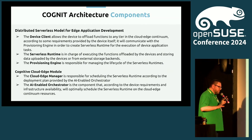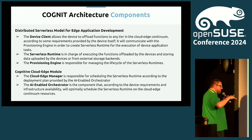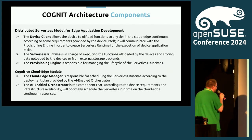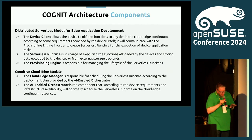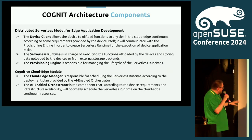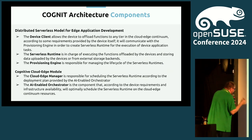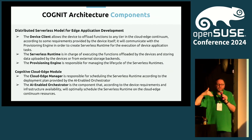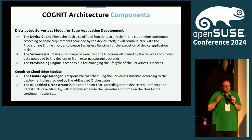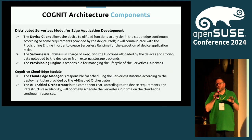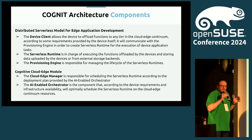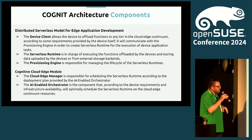There is also a provisioning engine responsible for managing the lifecycle of those serverless runtimes. The intelligent part is the cloud edge manager, which uses an AI-enabled orchestrator to determine where to place computation. We also incorporated scaphandre to get energy consumption information from those nodes — that was one of the enhancements added in the first 18 months after the initial prototype.